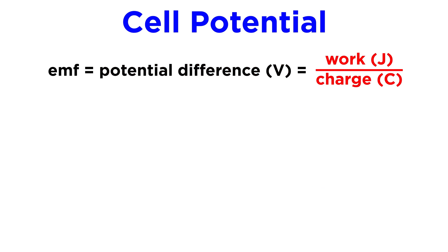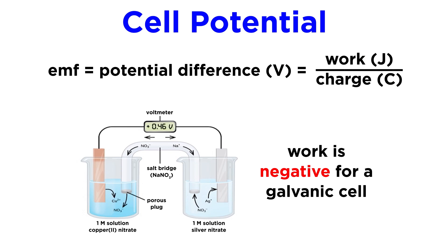Recall that a volt represents a joule of work per coulomb of charge transferred, so V equals J over C. In the context of an electrochemical cell, we consider work to be negative when flowing out of the system, such as when a galvanic cell produces a current.